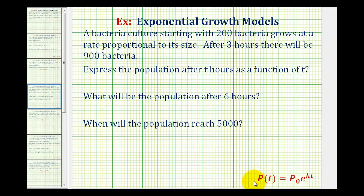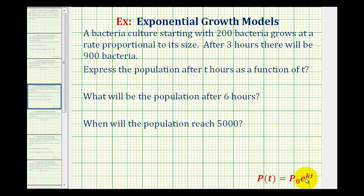We'll be using the function p of t equals p sub zero times e raised to the power of kt to model this situation. Where p sub zero is the starting population, k is the exponential growth rate, t is the time in hours, and p of t is the population after t hours.